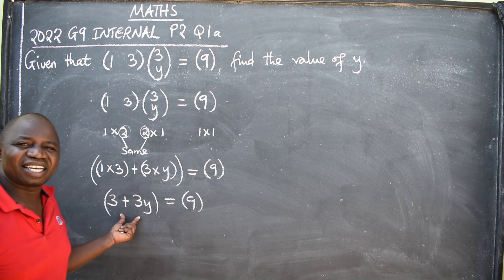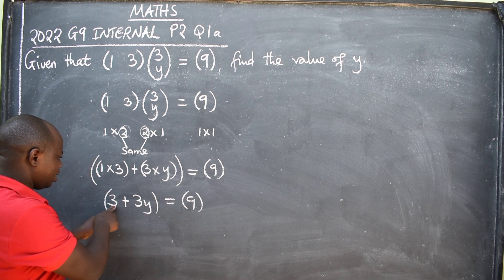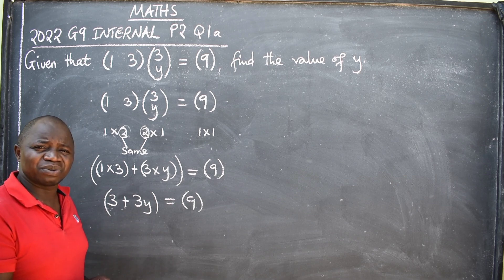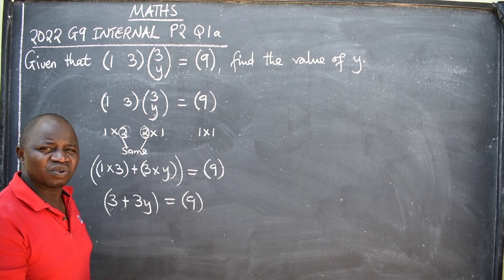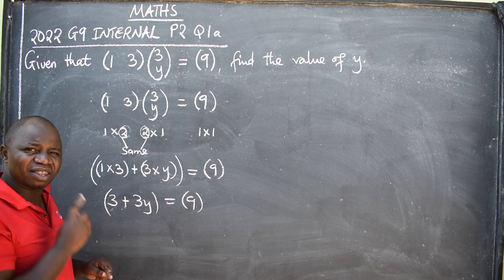Remember, these are not like terms. Therefore, you cannot add them. Don't say three plus three y is equal to six y. No. You cannot add. There is y here. Here, there's no y. You can't add. So, this is a single thing. This is one thing.